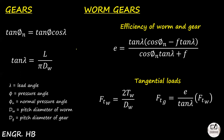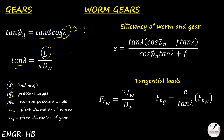Besides the lead angle, in worm gears we also have the normal pressure angle. To get the normal pressure angle: tangent(normal pressure angle) = tangent(pressure angle) × cosine(lead angle). To get the lead angle — since worm gear combines gear and threaded member topics — tangent(lead angle) = L / (π × DW), where L is the lead. If single-threaded L = P, double L = 2P, triple L = 3P. The P here is the circular pitch.